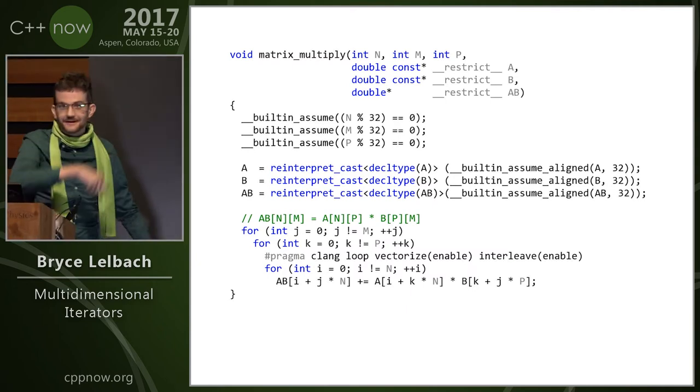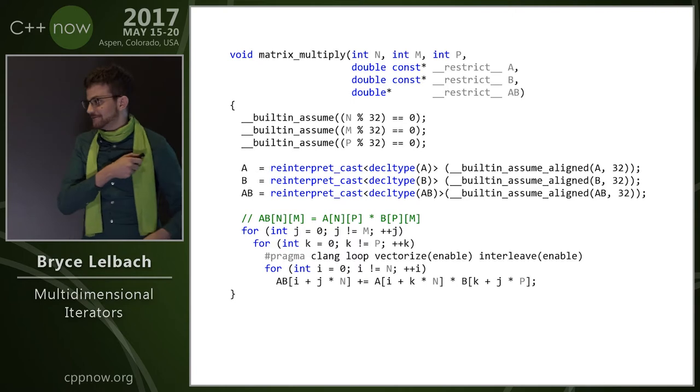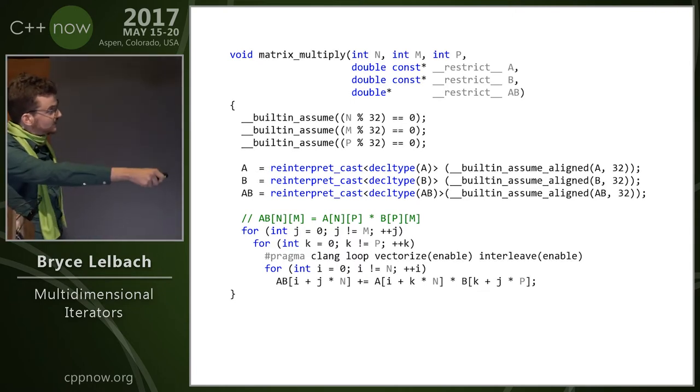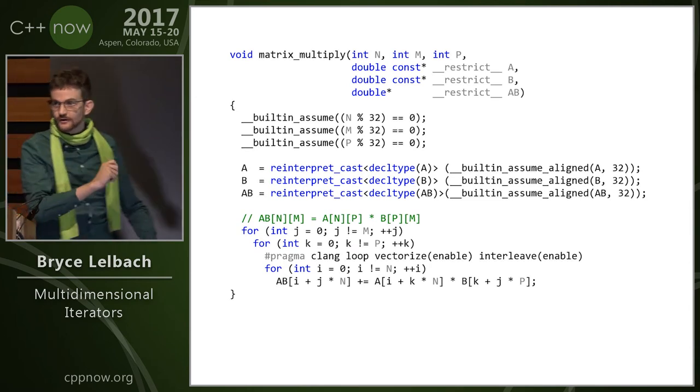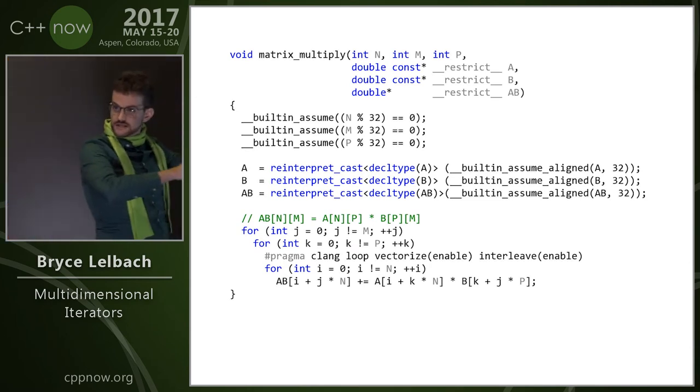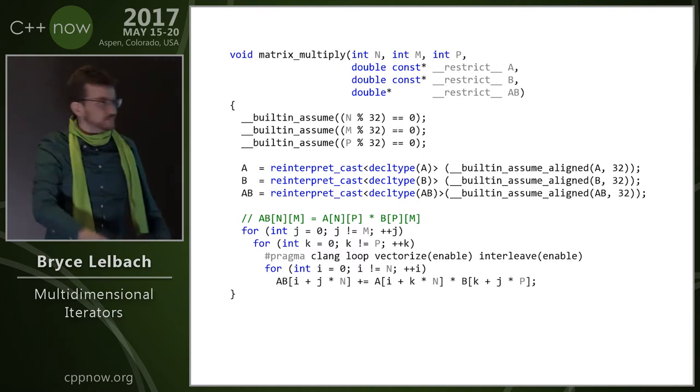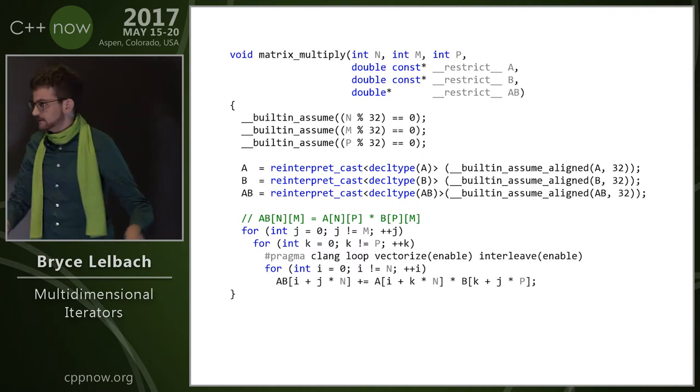We like code that looks like this. This is horrific. I really don't like this. One of the reasons I don't like this is because if I need to go change the iteration order, or I need to change the data layout, that is not an easy thing to do. It means I have to go rewrite this entire function. That's not fun.